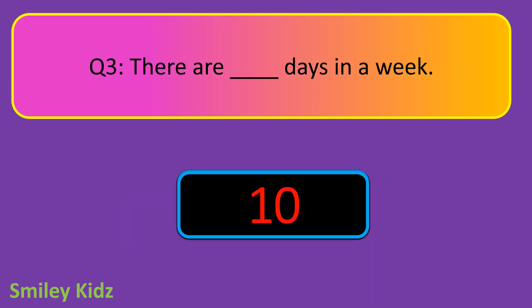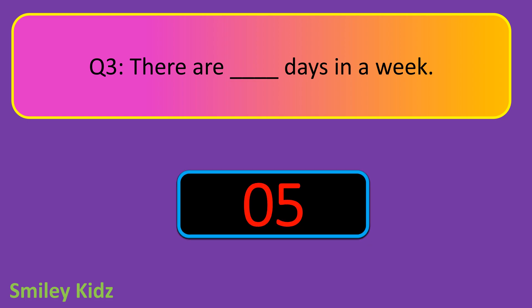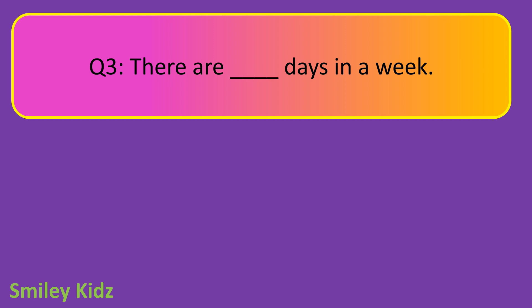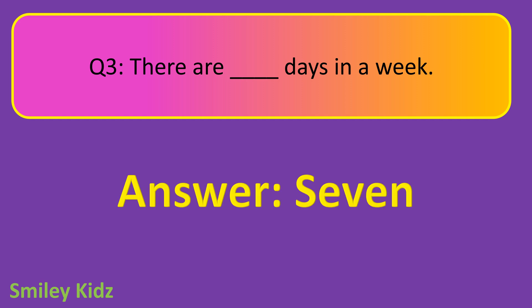Question number 3. There are dash days in a week. Your time starts now. And your time is up. The right answer is 7. There are 7 days in a week.